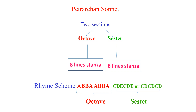The rhyme scheme of the Petrarchan sonnet is ABBAABBA for the octave, which is fixed, and the sestet rhyme scheme is flexible — it varies, using patterns such as CDECDE or CDCCDC.